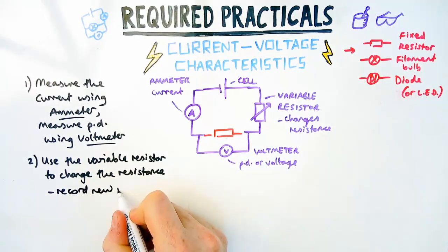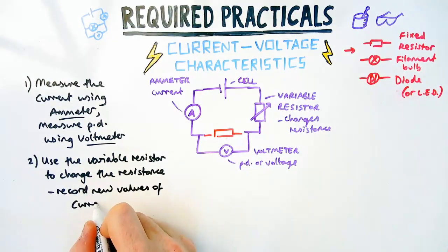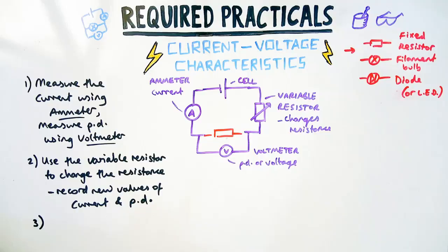We're going to record the new values of current and PD using the ammeter and voltmeter. Now we should have a range of values, so we're going to repeat that last step to make sure that we have a few different values.